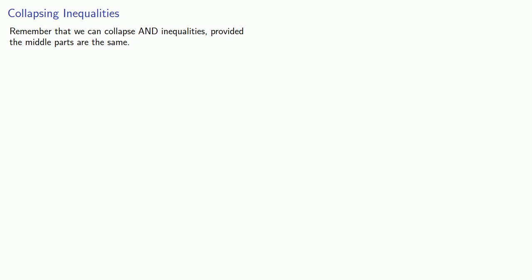Remember that we can collapse AND inequalities, provided the middle parts are the same. So if I have the inequality A less than or equal to B, and also B strictly less than C, since the middle part is the same, I can merge the two inequalities into a single three-part inequality.